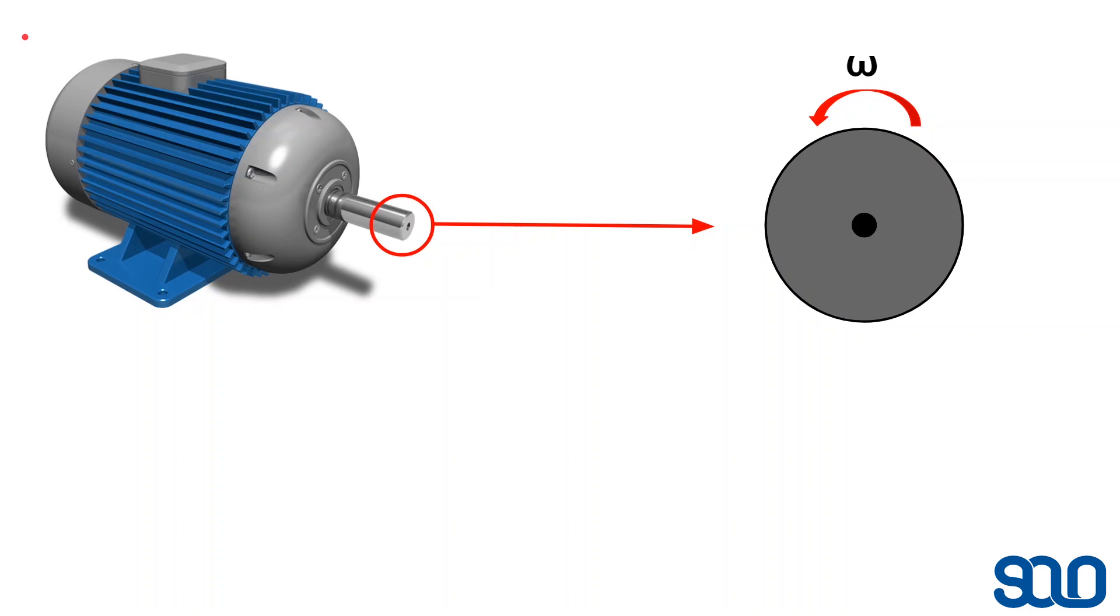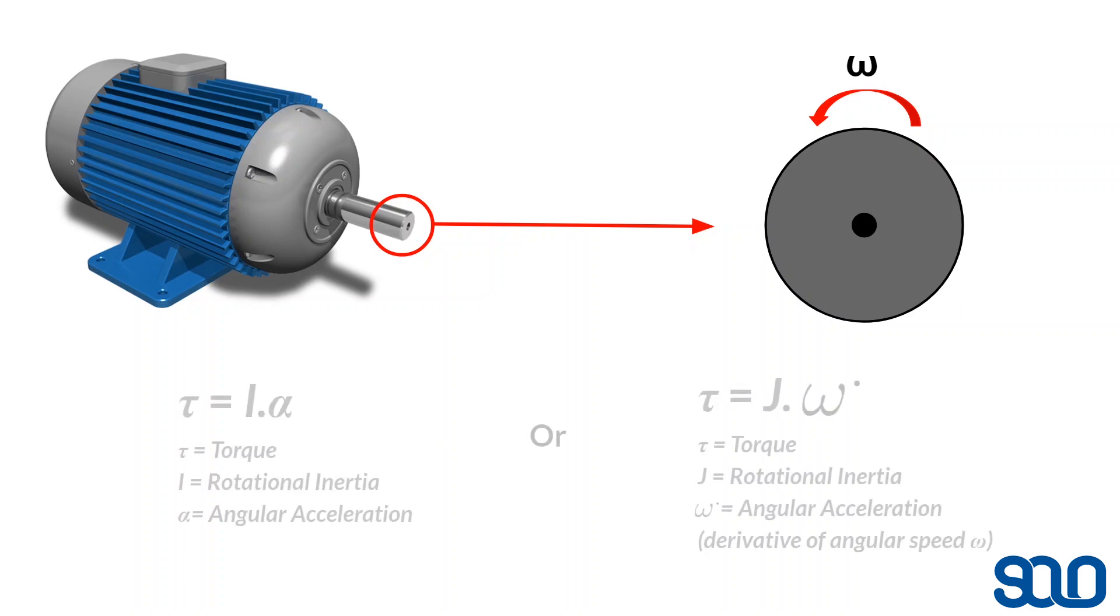If we look at the shaft of the motor, it's a bare motor without any load connected to its shaft. If the motor rotates with the speed of omega in a counterclockwise direction like this, we can define some equations for the torque and its relation to the rotational inertia and angular acceleration. As you can see, the torque is equal to the rotational inertia multiplied by the angular acceleration.